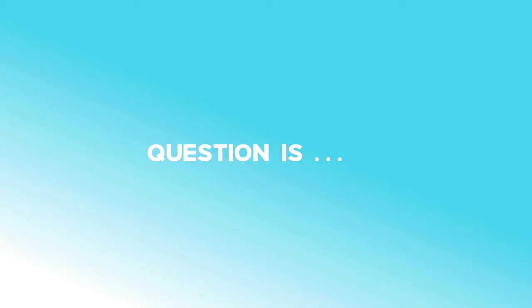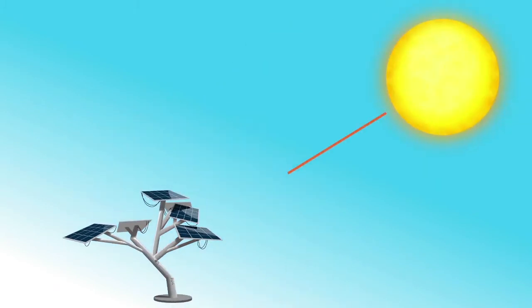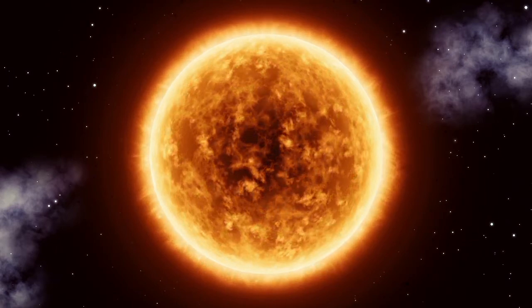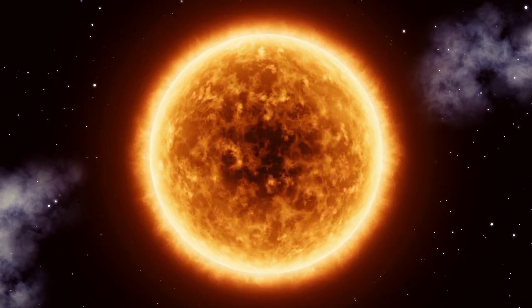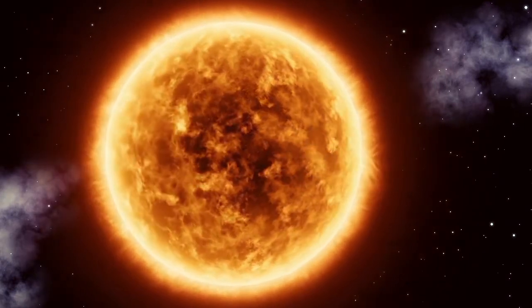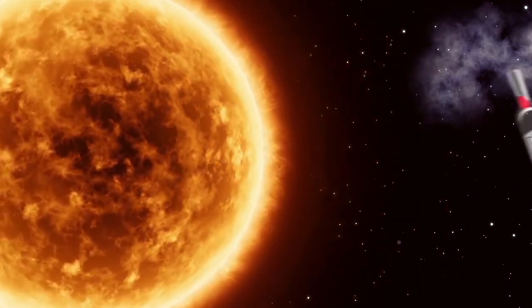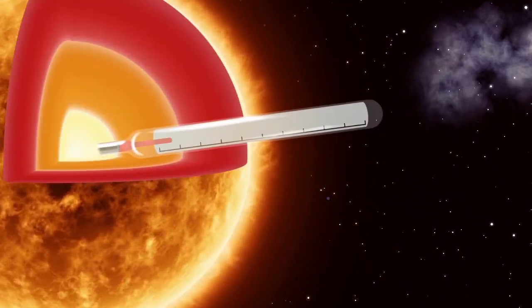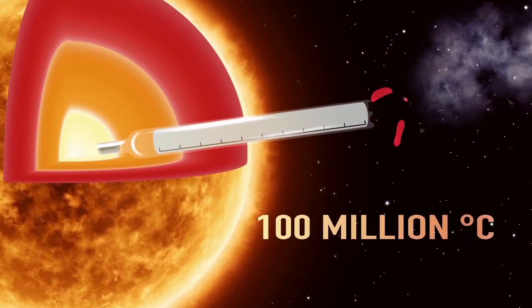Question is, how does the sun's energy get here and where does it come from? You may know that the sun is a very large ball of hydrogen. The ball is so big that gravity crushes the center of the sun to about 100 million degrees.